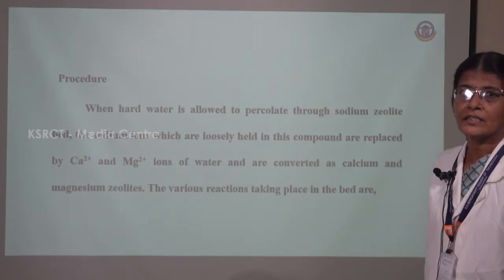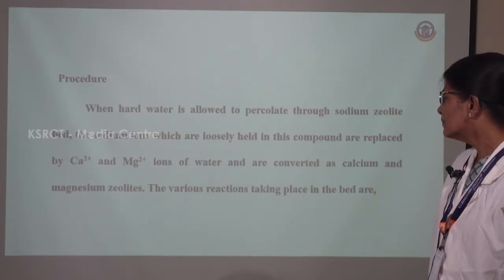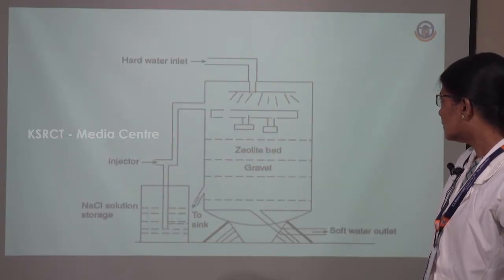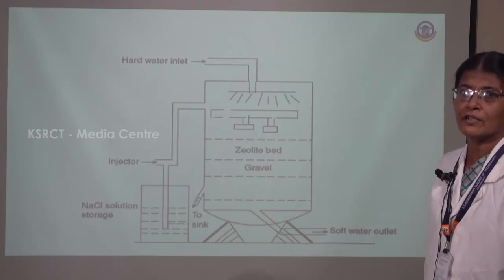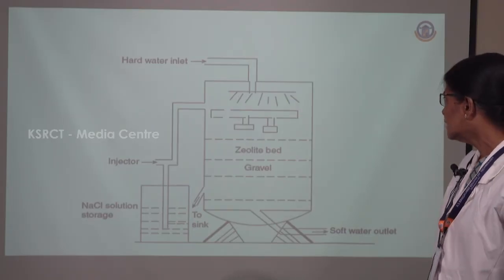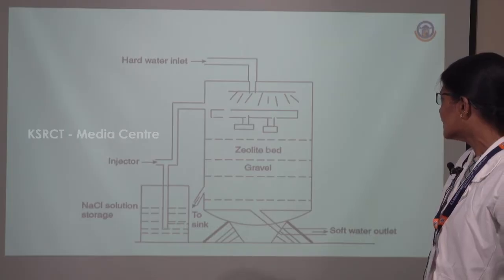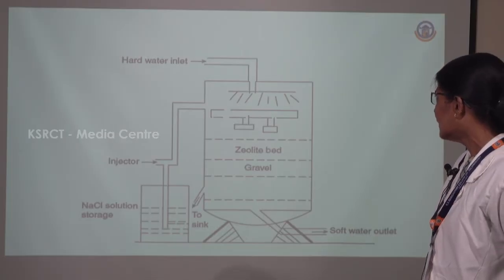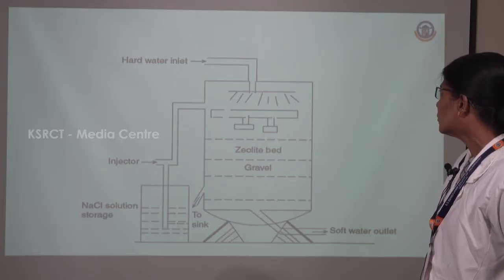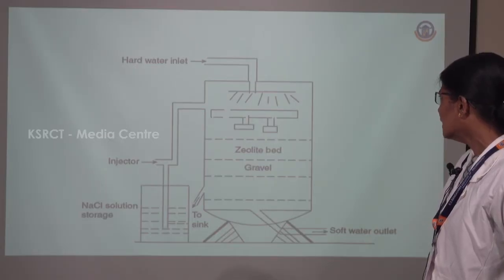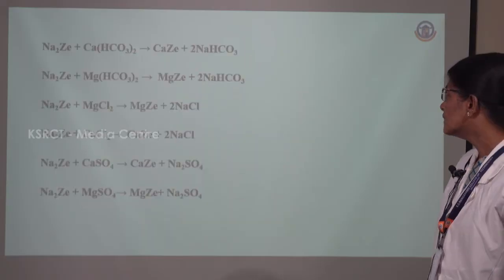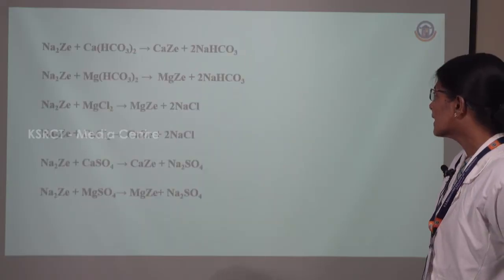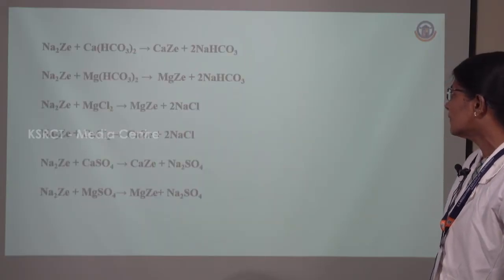The reactions which are taking place are given below. This is the process we are using for the conversion of hard water into soft water. The setup consists of a zeolite bed with an inlet and an outlet. The inlet hard water is passed in, and through the outlet the soft water can be collected. The various chemical reactions taking place in the bed are given here.